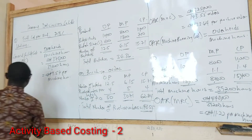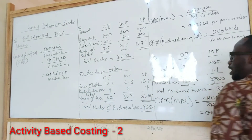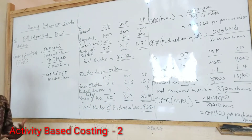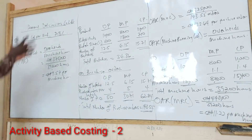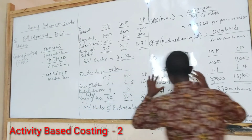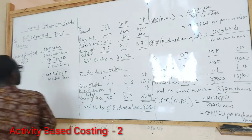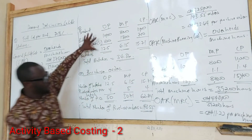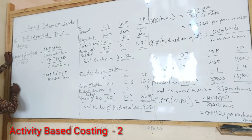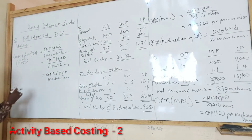We finish with the first work, which is calculation of the overhead absorption rates. Now after you calculate the overhead absorption rates, you now have to calculate the total overheads for the products. So stay with me closely because I'm going to be doing something here — I'll just say it but make sure you follow me to understand.